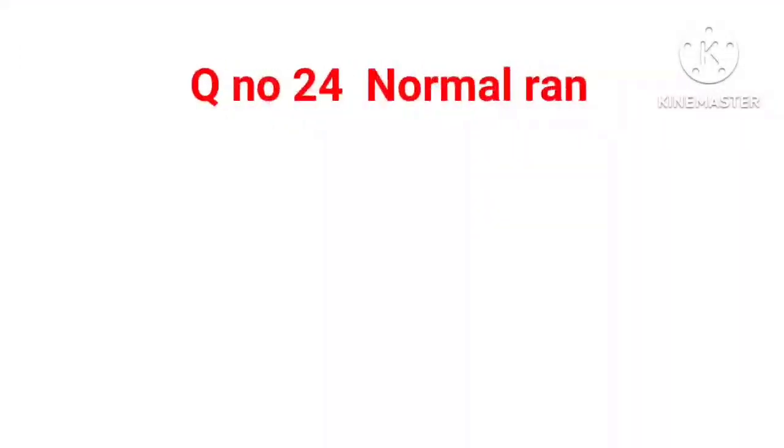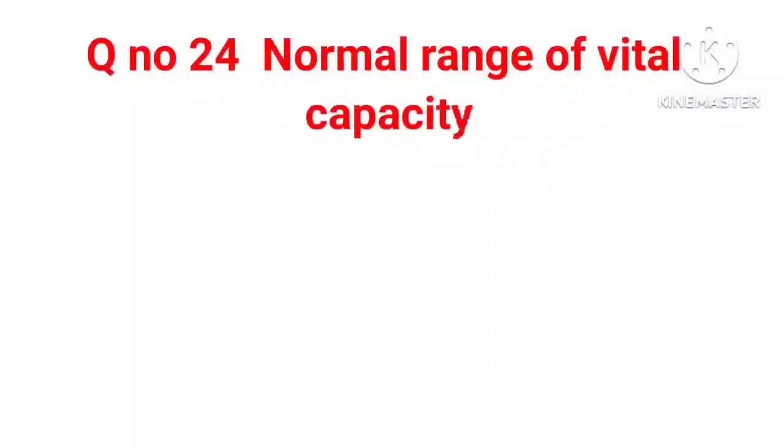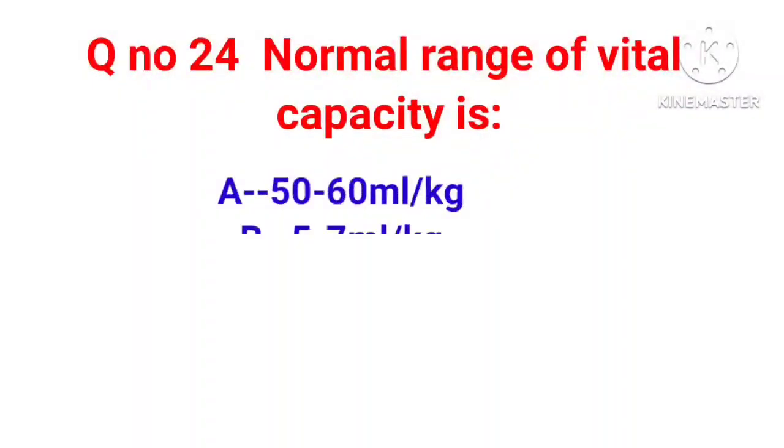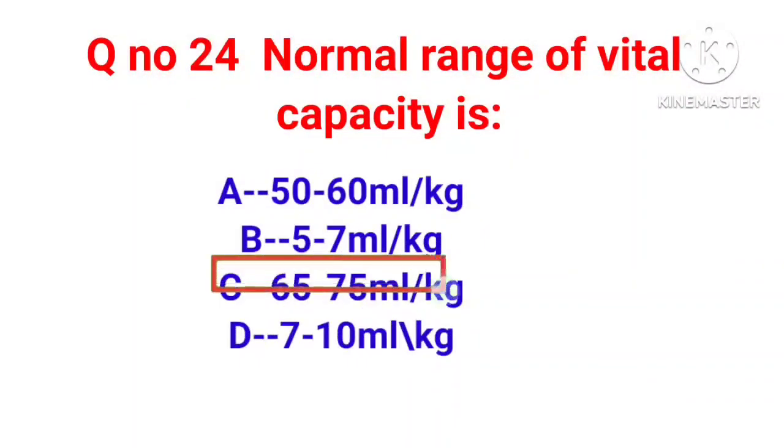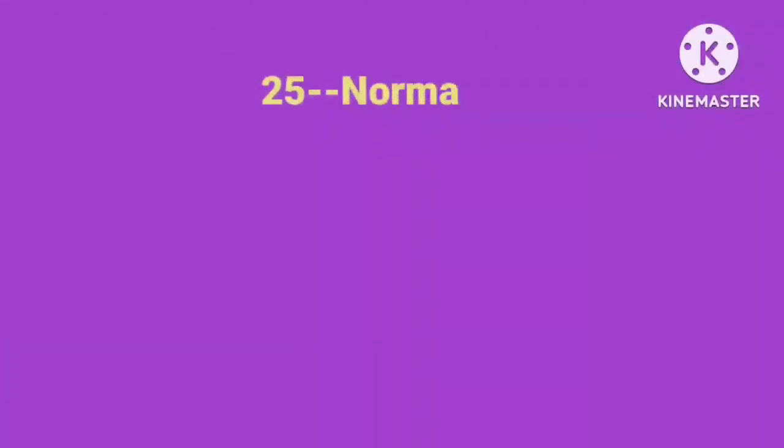Question number 24. Normal range of vital capacity is. Correct answer is option C, 65 to 75 ml per kg.